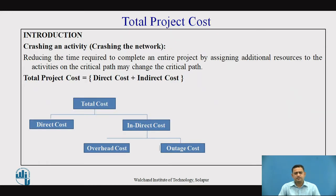The total project cost is the summation of direct cost as well as indirect cost. Crashing of a network, or crashing of an activity, is nothing else but a reduction of the time or duration of a particular activity to achieve the optimum cost of the activity or the overall project. We are interested to crash the particular activity — reduce the duration — to minimize the overall project duration while also considering the optimum cost.